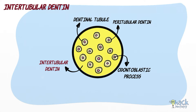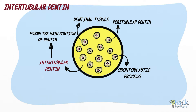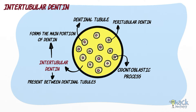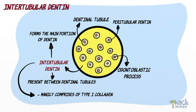The intertubular dentine forms the main portion of the dentine and is found between the dentinal tubules. It mainly consists of type 1 collagen fibrils and is less mineralized than the peritubular dentine.